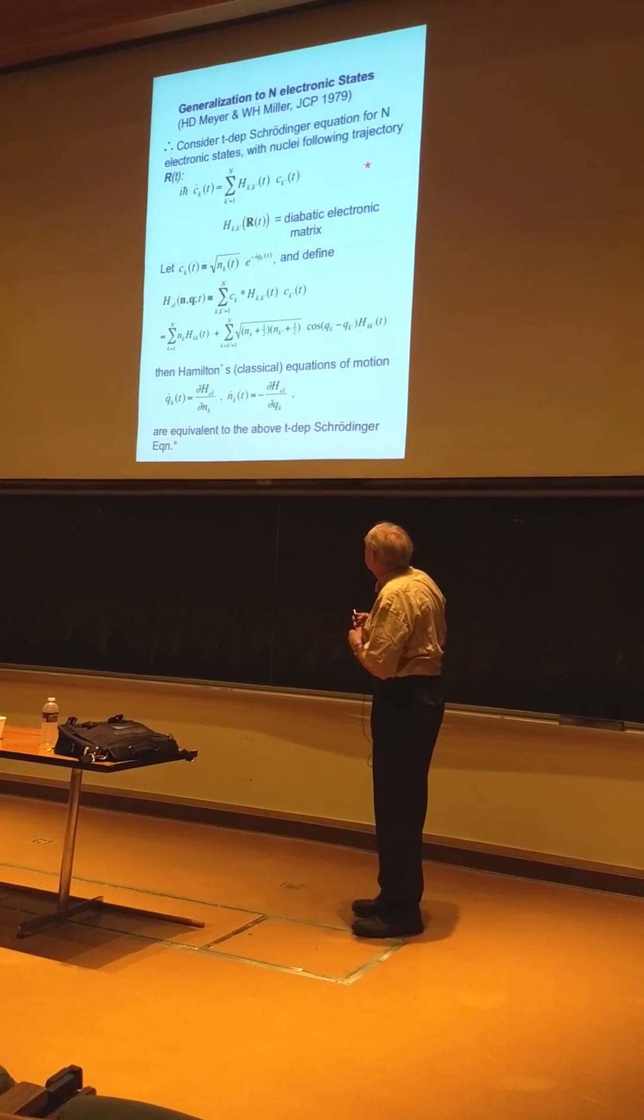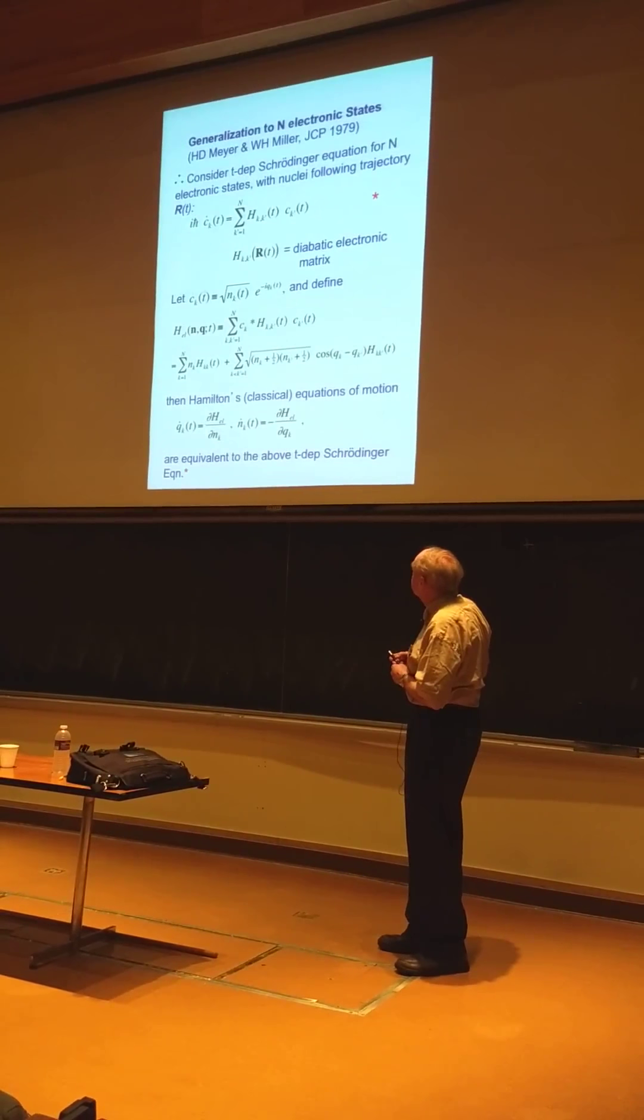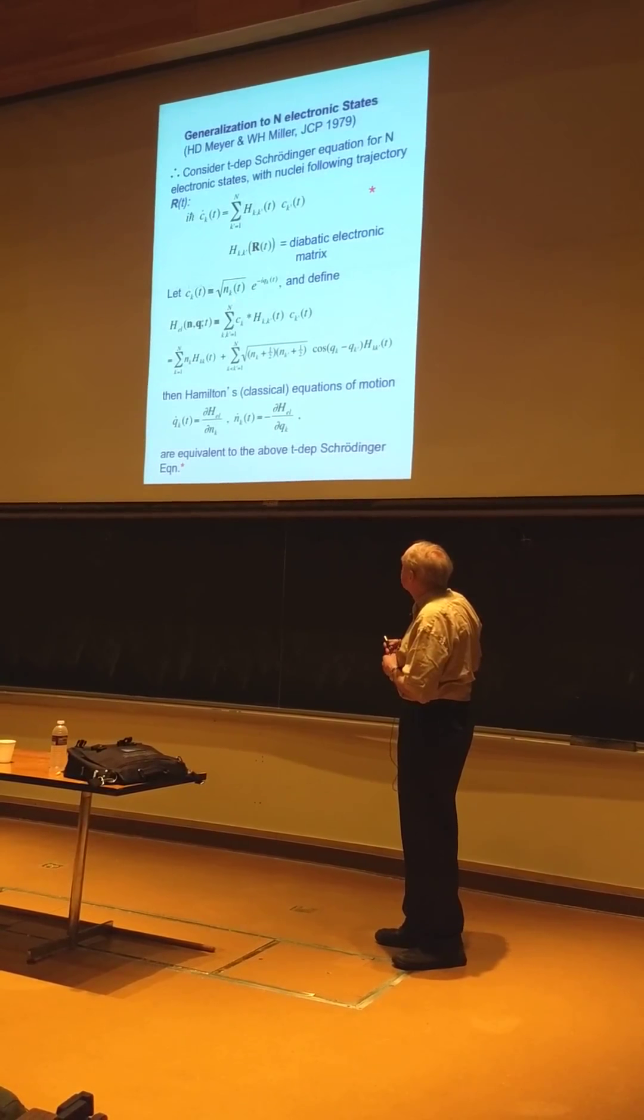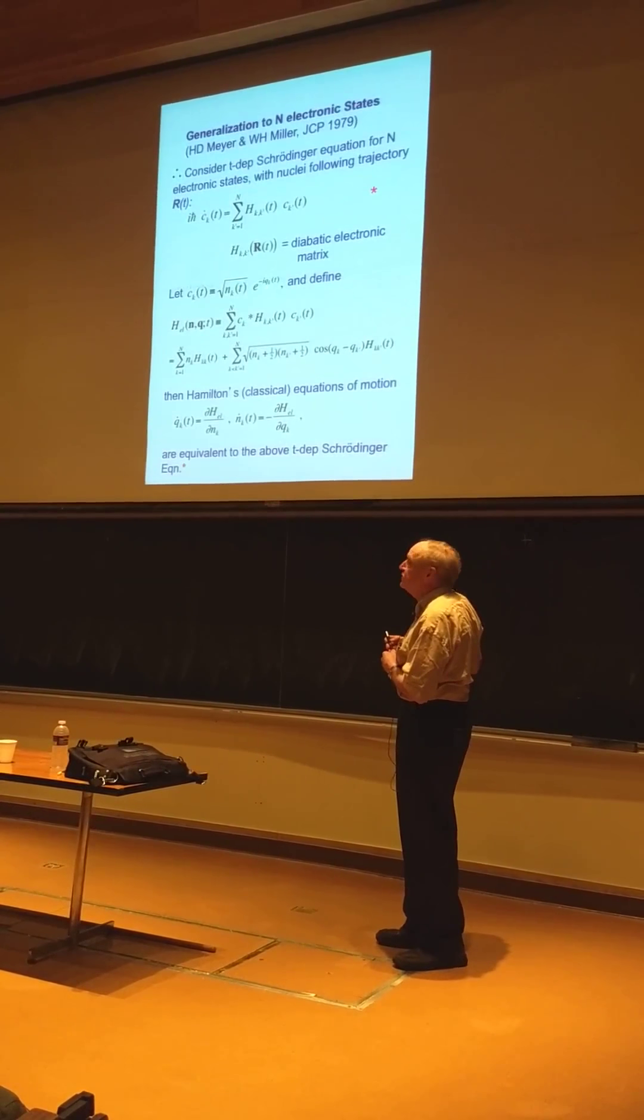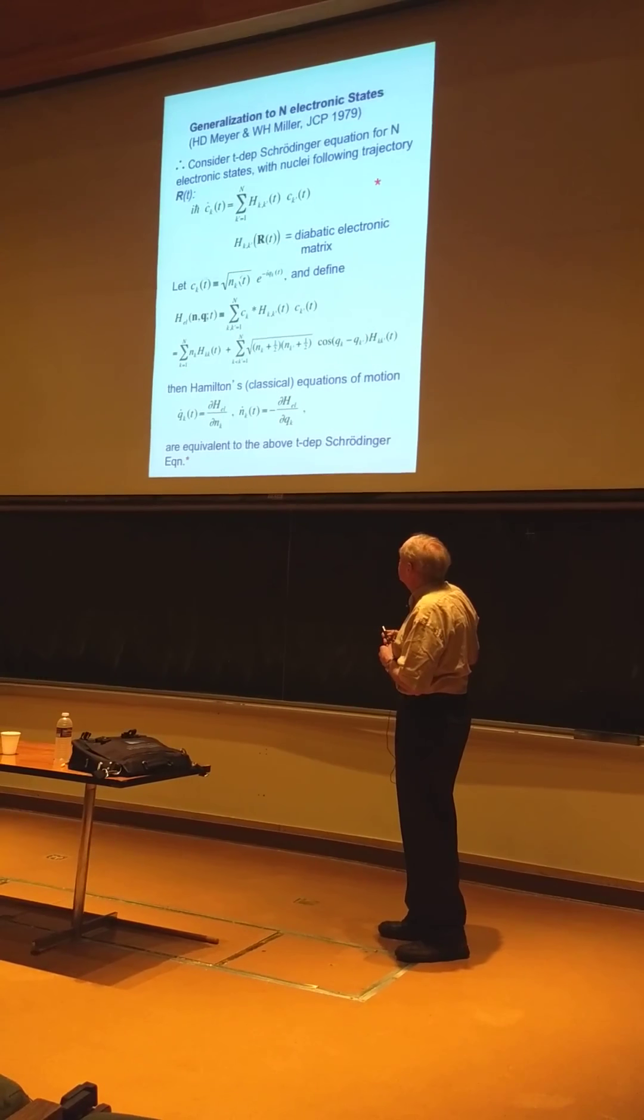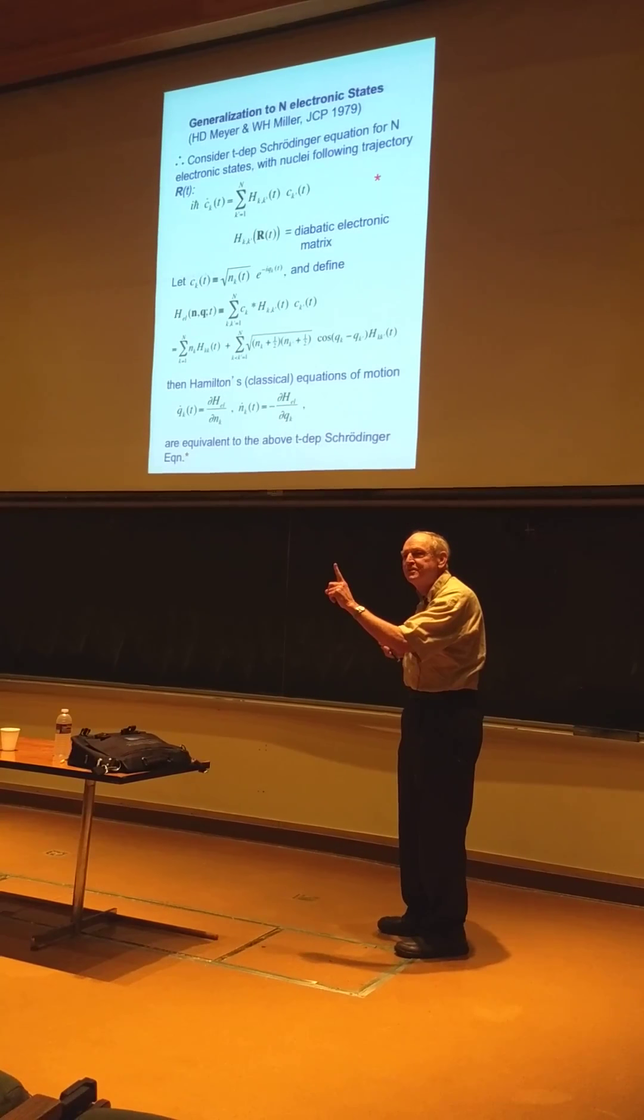In other words, the initial conditions are the initial occupied state is one, and that has a phase. But all the unoccupied states, n is zero, and zero doesn't have a phase. So, the initial conditions would be the occupied state. But if it's only one phase, that's the same as having no phase.